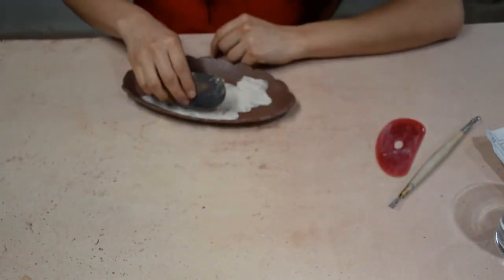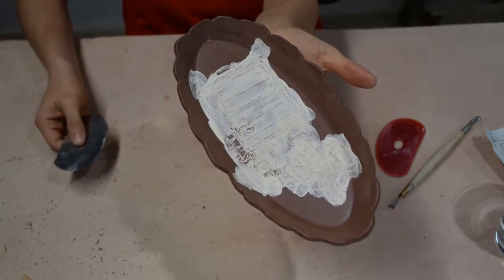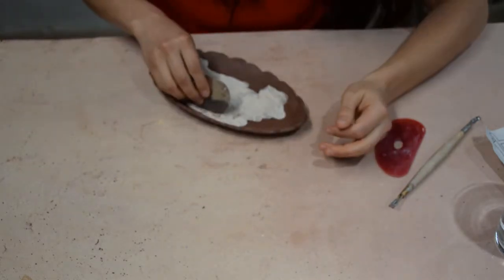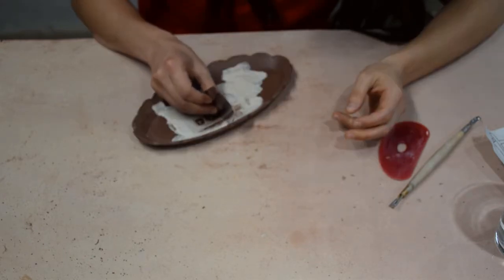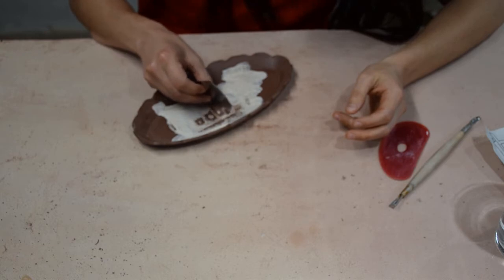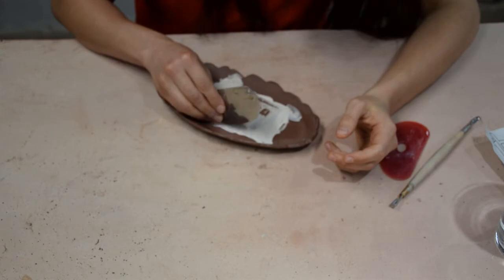Once the underglaze is dry, sort of leather hard actually, you're going to go ahead and with a mix of tools, start scraping it off. As you scrape it off, you'll see that all the color goes away, and then only the color that's inside the lines is what's going to stay.